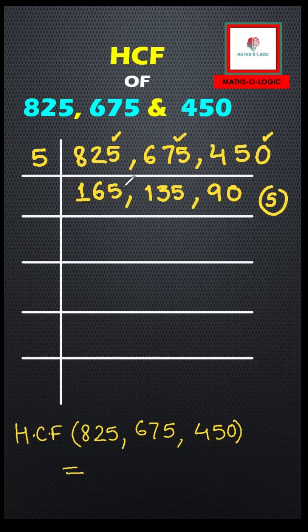Again, I'll observe the last digits of the numbers: 5, 5, and 0. Using the divisibility rule of 5, these three numbers are going to be divided by 5 again. Let's write 5 here and divide these three numbers by 5.